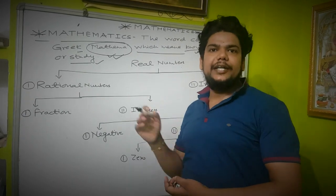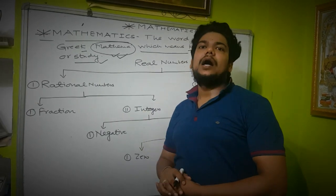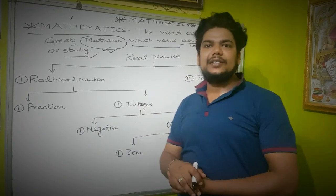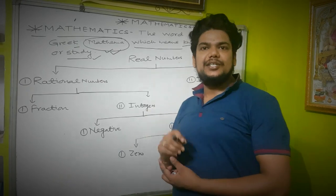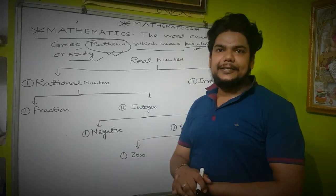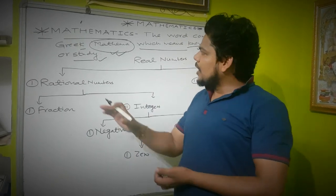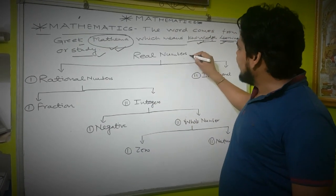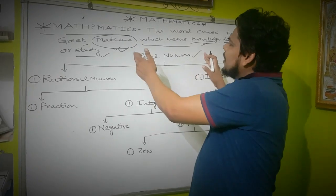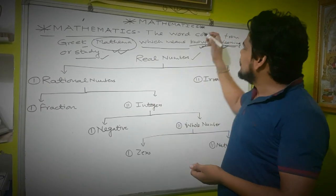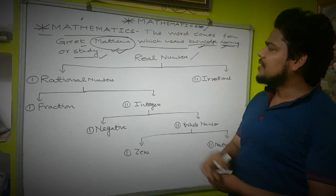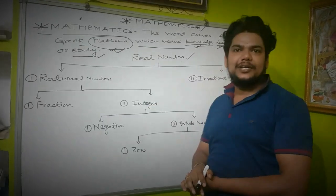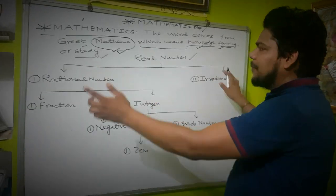In mathematics, we study quantity, pattern, and shapes. So in mathematics, we take a chapter for real numbers, which is Class 10, Chapter 1: Real Numbers. So we take a flow chart to understand this.